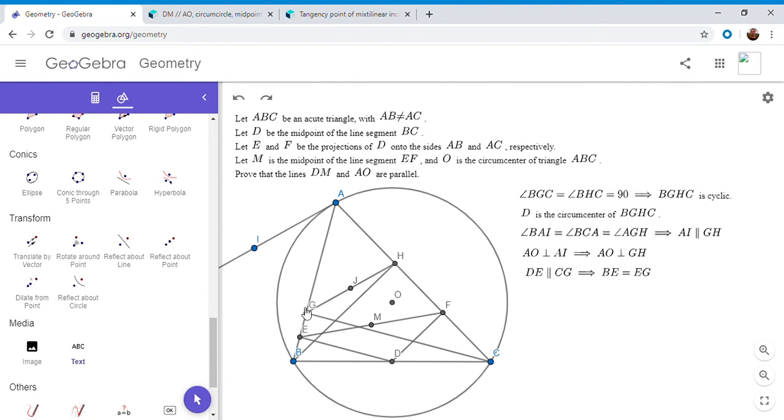So BE is equal to EG. But we also know that J is the midpoint of GH by construction. So since GJ is JH, EJ has to be parallel to BH. And BH obviously has to be parallel to DF, because they're both perpendicular to AC. So we have JE is parallel to DF. And by the same argument, JF is parallel to DE.